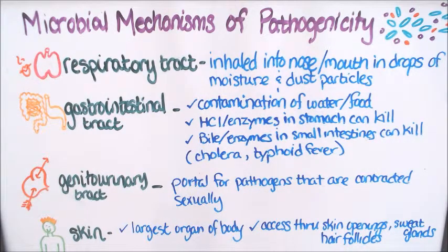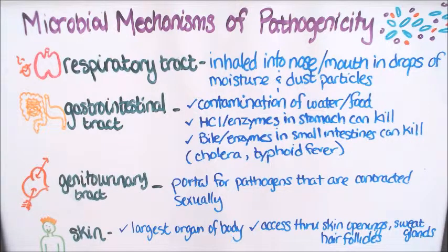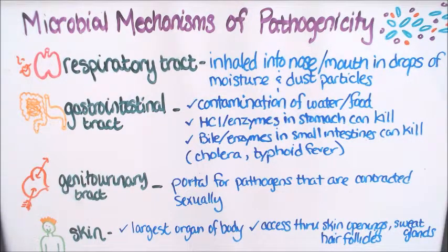Next up we have the gastrointestinal tract. Pathogens can contaminate water and food. The stomach can kill these pathogens by hydrochloric acid or the enzymes in the stomach, and the small intestines can kill these pathogens by the bile and the enzymes in the small intestine.